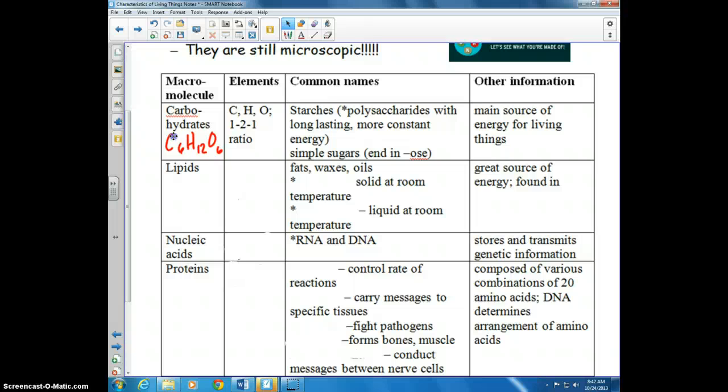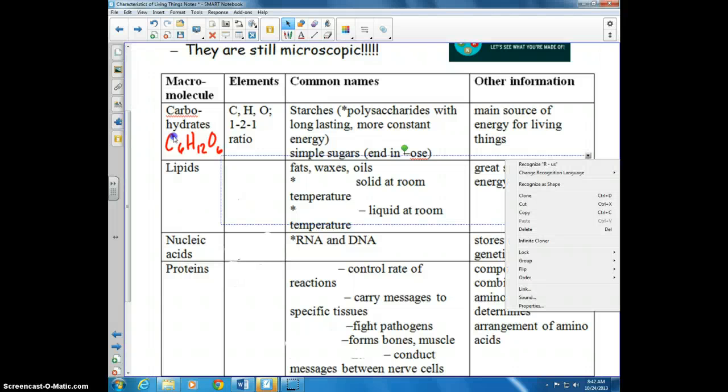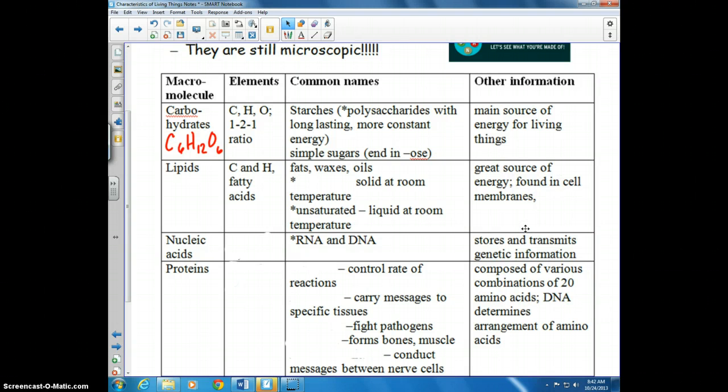Lipids are another type of macromolecule. Lipid molecules are made up of carbon and hydrogen, as well as fatty acids. They include fats, waxes, and oils. Saturated fats are solid at room temperature, like butter, lard, or bacon grease. Unsaturated fats are liquid at room temperature, like vegetable oil, canola oil, or olive oil.